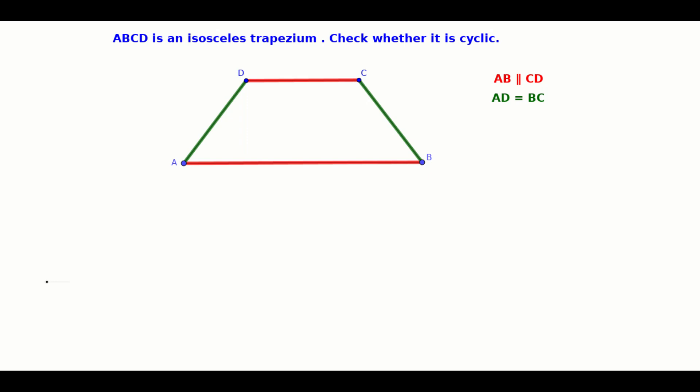Here, AB is one of the parallel sides. The angles at its ends are angle A and angle B. They are equal.